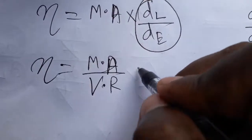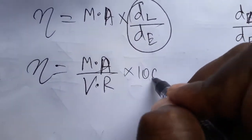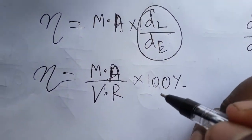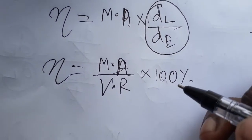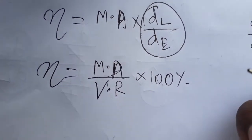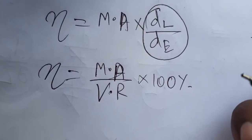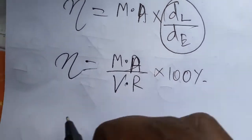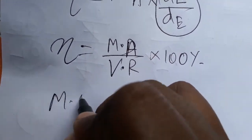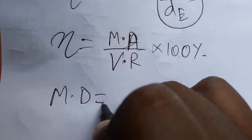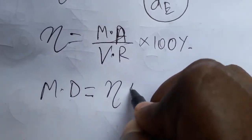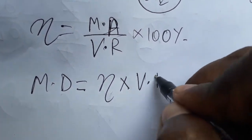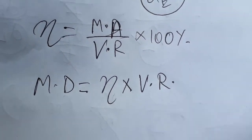Efficiency will be 100% when input equals output, but practically this is not going to happen because of friction, tension, and elasticity of the wire. So we get the final relation: mechanical advantage equals efficiency times velocity ratio.